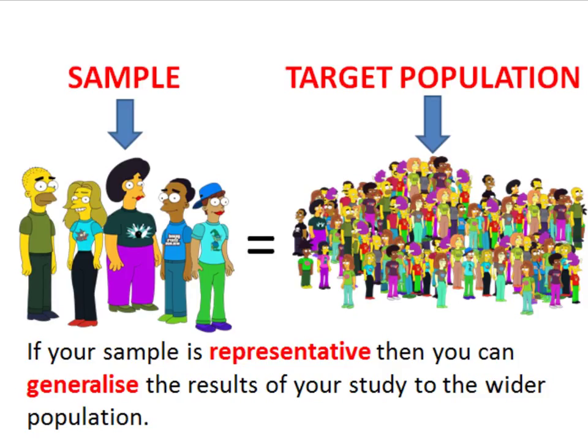So what we have to do when we carry out sociological research is to select a smaller group from the research population. And this smaller group is what we call our sample. In other words, a sample is simply a smaller part of the target population.